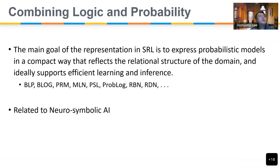There are actually many formalisms in this area — it's like an alphabet soup: BLP, BLOG, PRM, MLN, PSS, IDN, and so on. And this idea is actually being revisited these days also in terms of so-called neuro-symbolic AI.